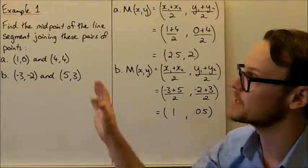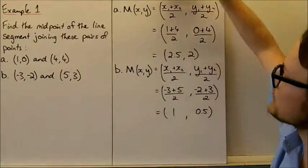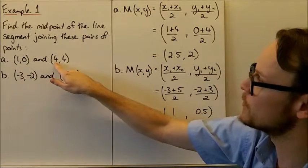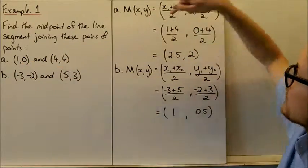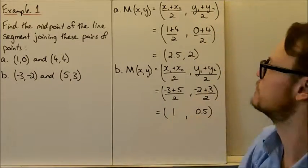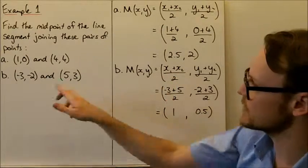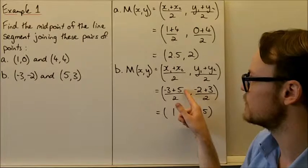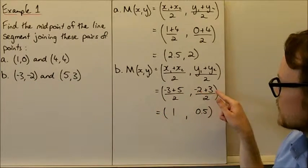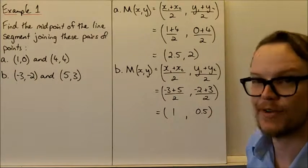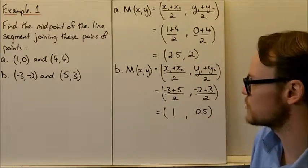Let's do an example and find the midpoint of some line segments. For the first pair of points, the x values are 1 and 4: 1 + 4 = 5, divided by 2 is 2.5. The y values are 0 and 4: 0 + 4 = 4, divided by 2 is 2. So the midpoint is (2.5, 2). For the second pair, x values are −3 and 5: −3 + 5 = 2, divided by 2 is 1. The y values are −2 and 3: −2 + 3 = 1, divided by 2 is 0.5. So the midpoint is (1, 0.5). You could leave these as fractions, but decimals are often easier on a Cartesian plane.